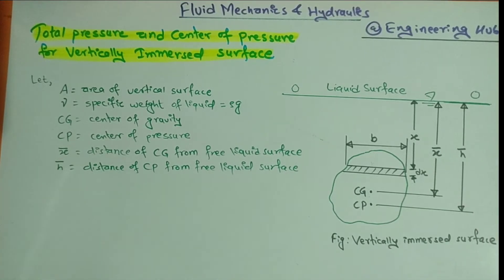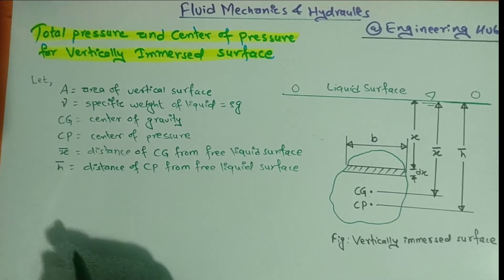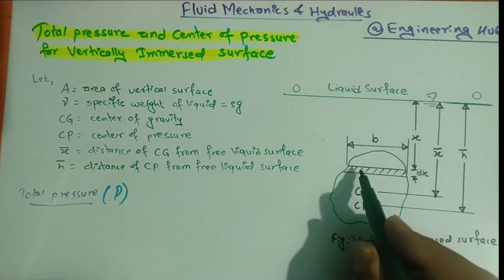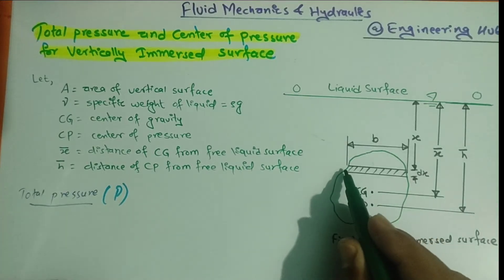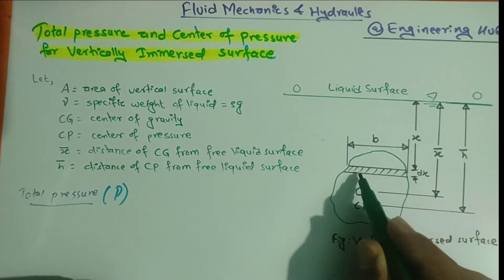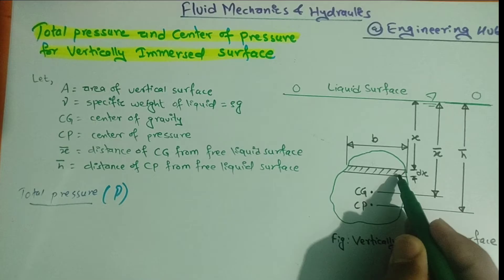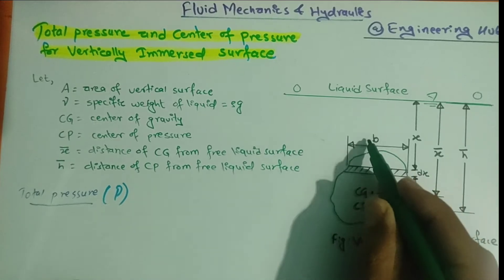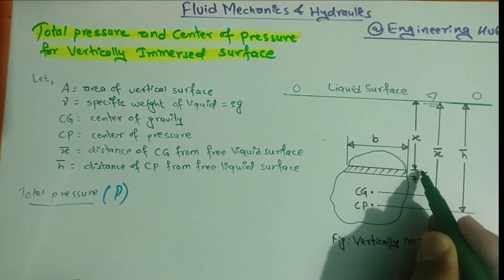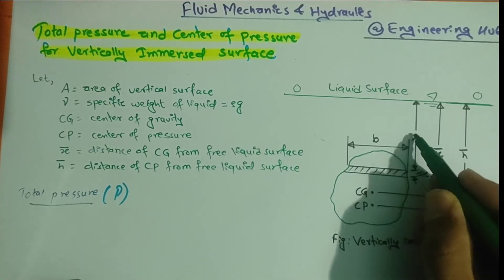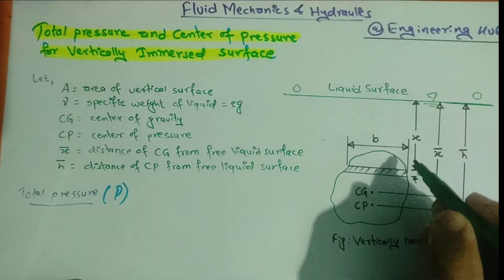Now we will start to calculate the total pressure. To calculate the total pressure, a small section is considered inside the body, which is treated as a rectangle having width b and depth dx, at a distance x from the liquid surface.